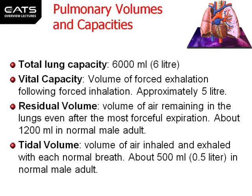An easy way of remembering this is TVR Tuscan — which is a racing car for those in the know — and the numbers 6, 5, 1, 0.5. The T stands for Total: six liters. The V for Vital: five liters. The R for Residual: 1.2 liters. And the Tuscan T for Tidal: 0.5 liters.